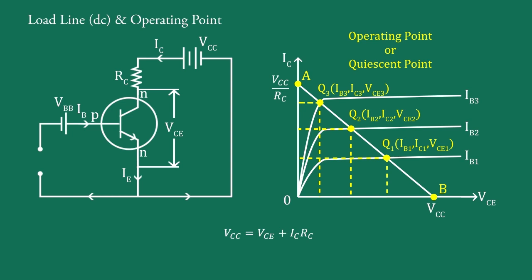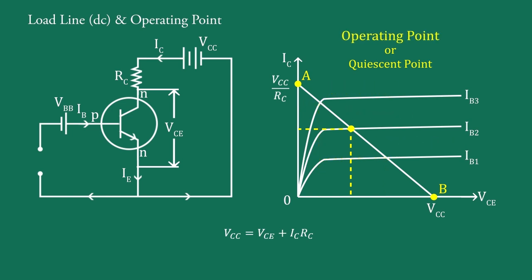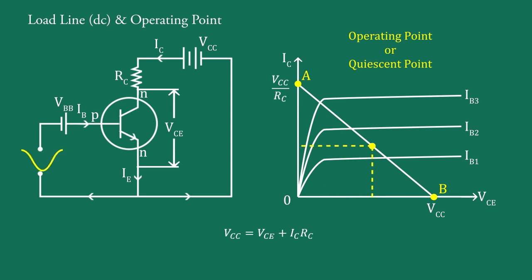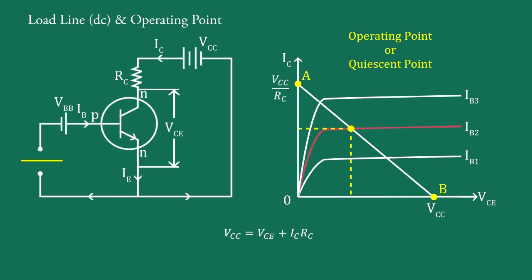It is called the operating point because the variation of IC and VCE takes place about this point when a signal is applied. It is also called the quiescent point or Q-point, because it is the point on the IC-VCE characteristics when the transistor is silent, that is, when no AC signal is introduced.